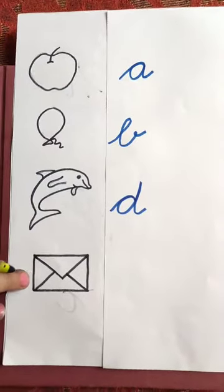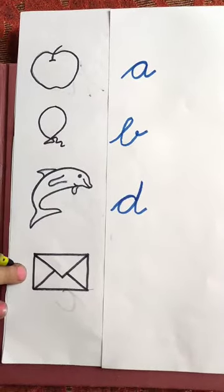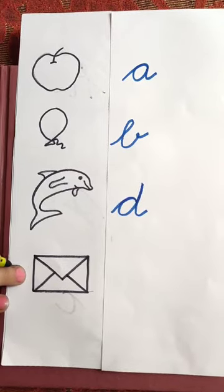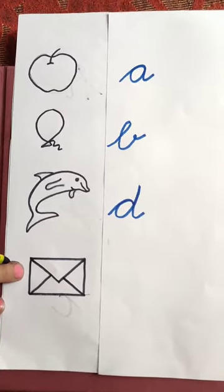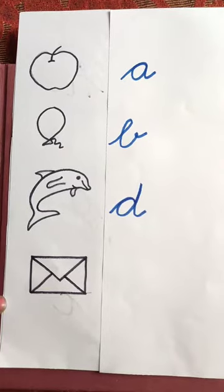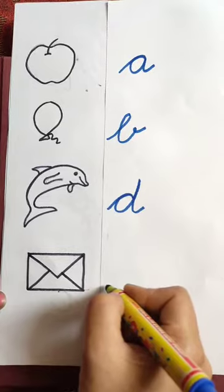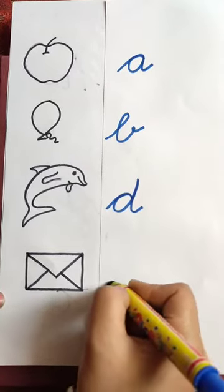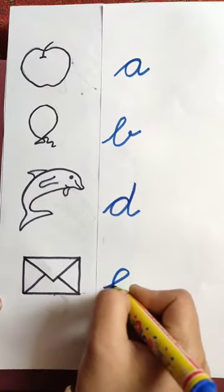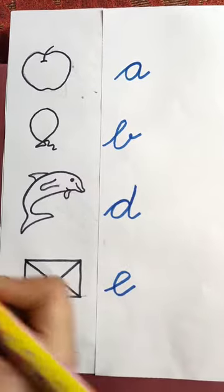Next picture is envelope. Envelope. Envelope. The beginning sound of envelope is A. And A is the sound of E. How we will write E? Like this. E, A, envelope.